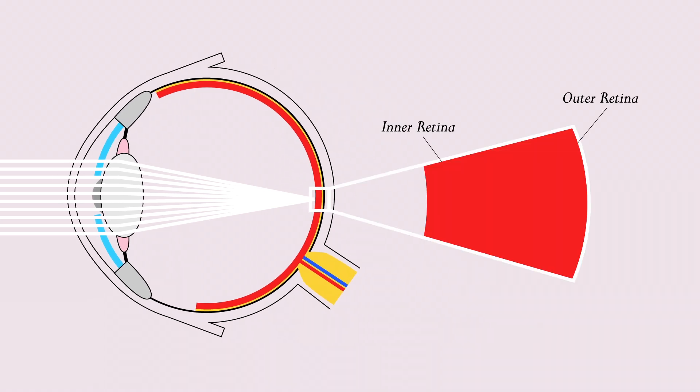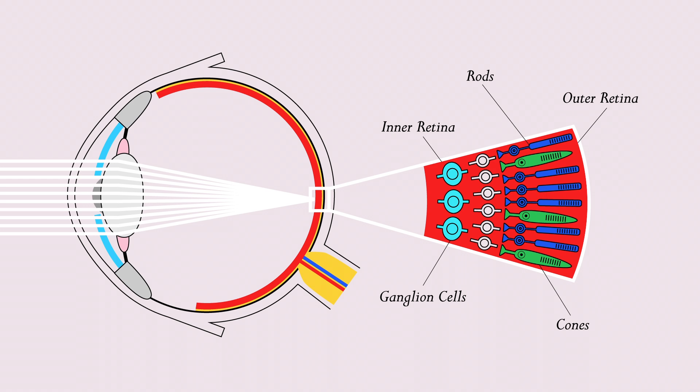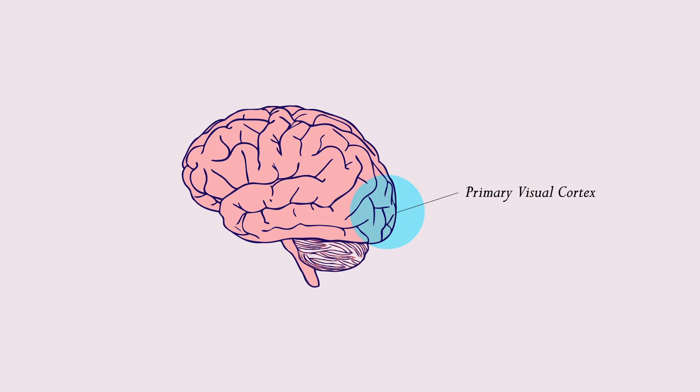Here, light-sensitive cells called rods and cones send information to ganglion nerve cells in the inner retina. Ganglion cells then send the information to the optic nerve, which sends the signal to the brain, where the signal is processed and interpreted.